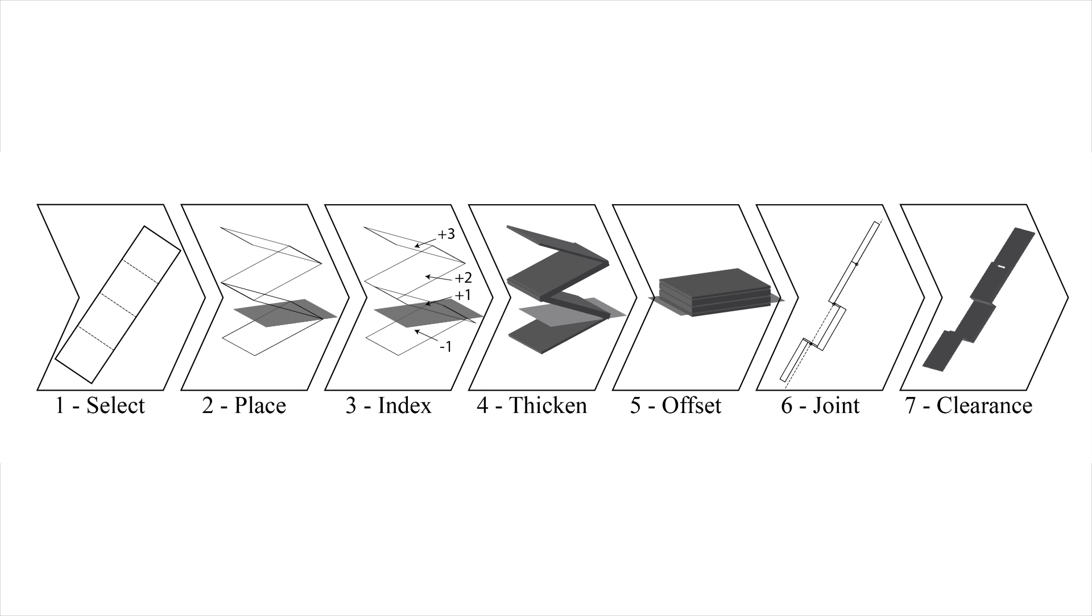In this method, an origami pattern is selected as the base model. Next, a joint plane is selected. The panels of the model are then indexed according to their position relative to the joint plane. The panels are then assigned a thickness and stacked in the order of their indexing. This results in some of the panels being offset from the joint plane.